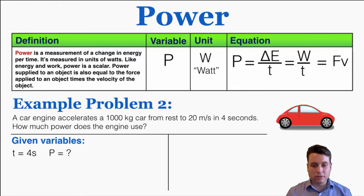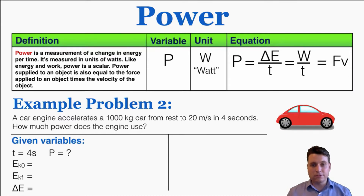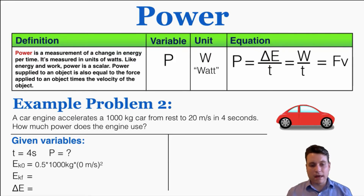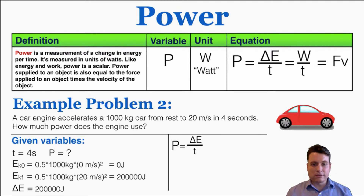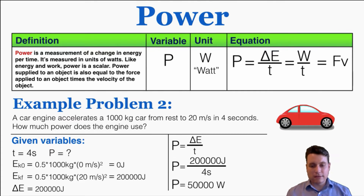The type of energy involved in this situation is kinetic energy, because we're given the car's mass and the car's velocity. I can calculate how much kinetic energy it starts with, how much it ends with, and the difference will be the change in energy. Starting from rest, the initial kinetic energy is zero joules. The final kinetic energy is one half times 1,000 kilograms times 20 squared, which equals 200,000 joules. So the change in energy is 200,000 joules, and power equals 200,000 joules over four seconds, giving this car's engine a power of 50,000 watts.